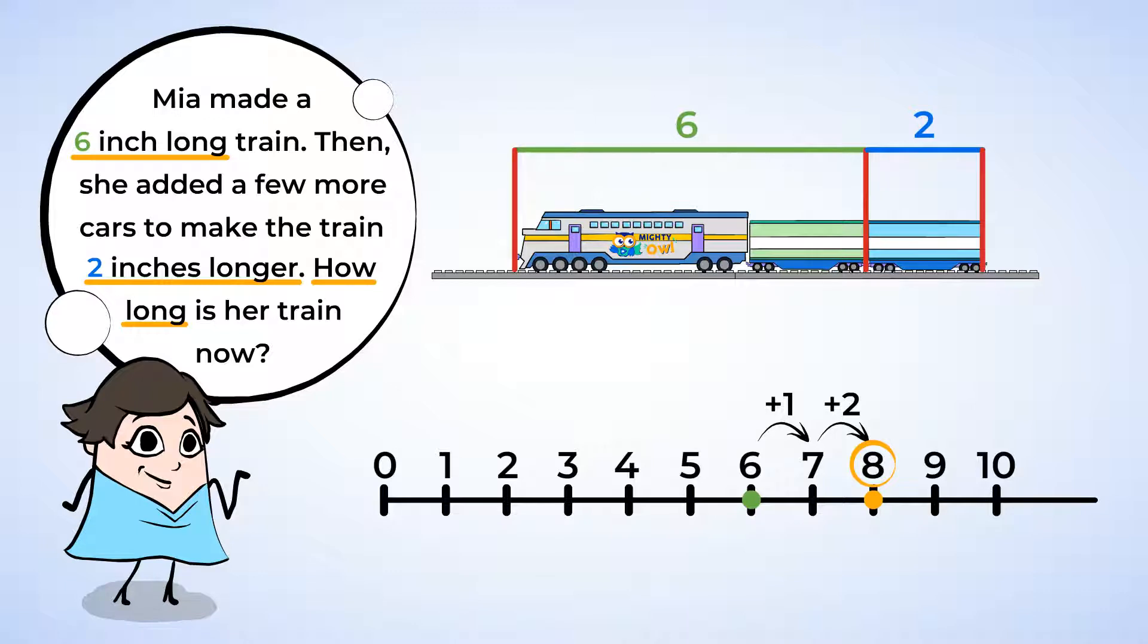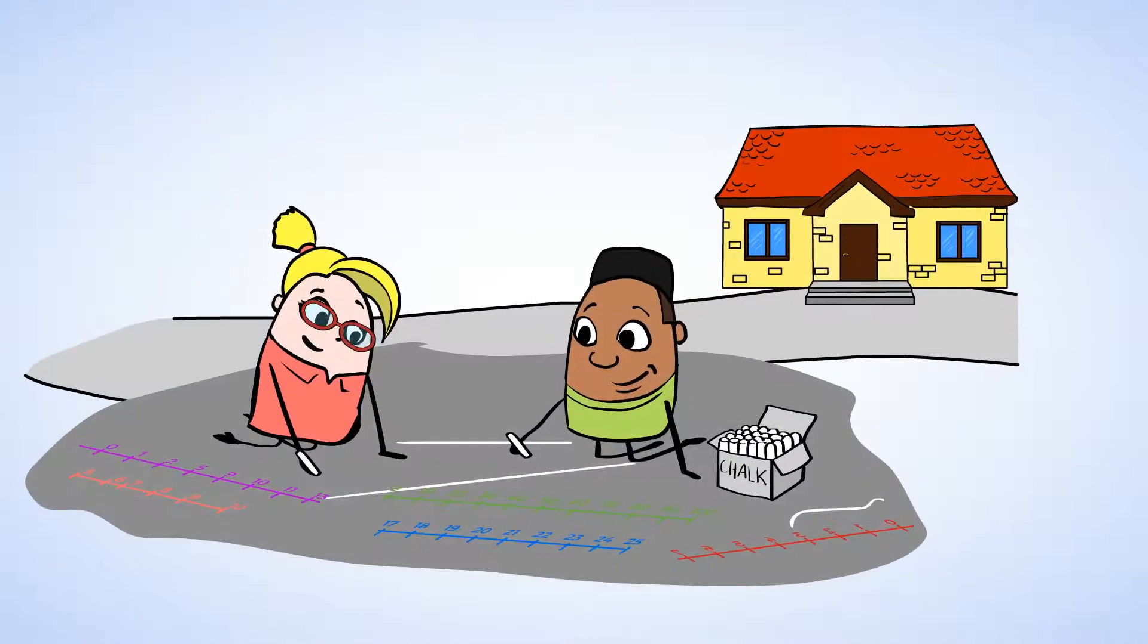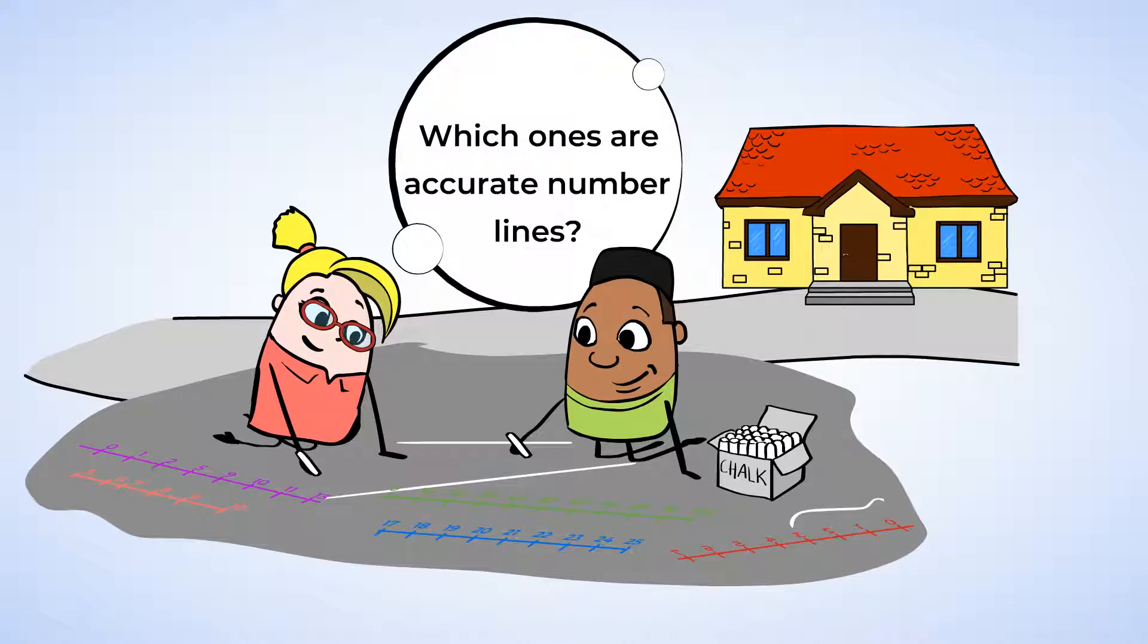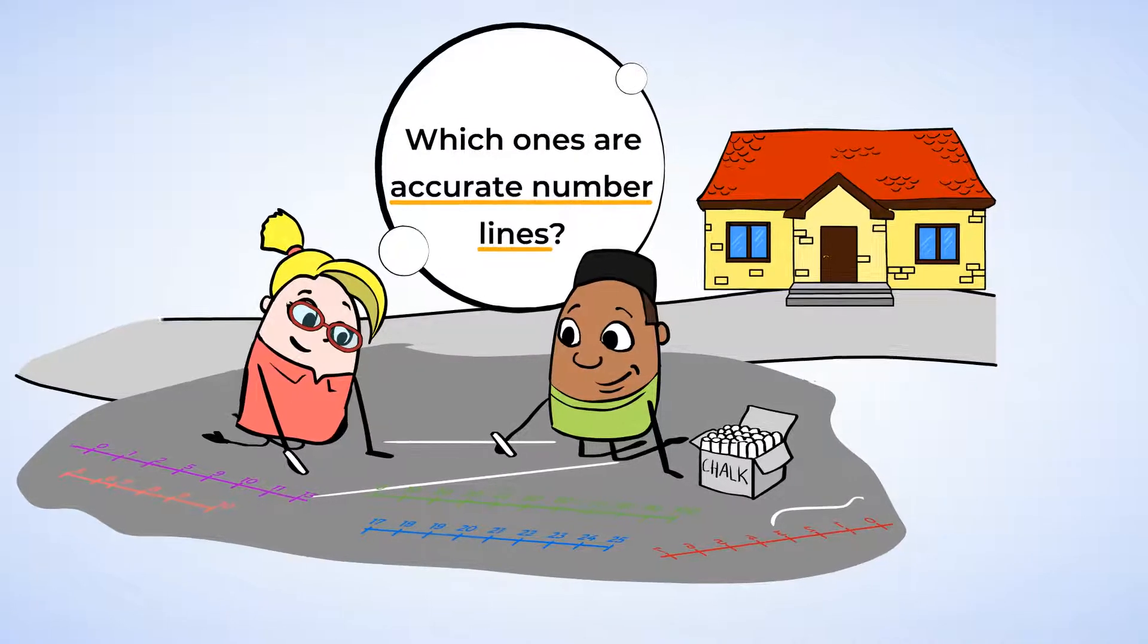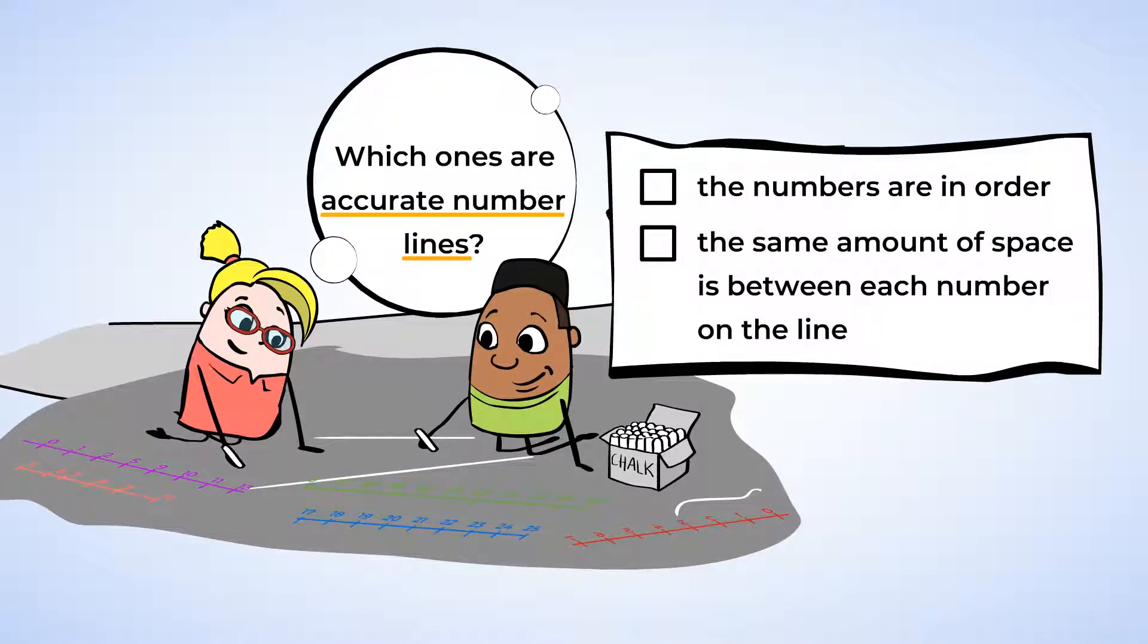Now we will continue using number lines for addition and subtraction in another video lesson. But first, I want to make sure you really understand number lines. Will and Jenny are outside drawing number lines in chalk on a driveway. Some of the number lines aren't correct though. Let's look at what they've drawn and figure out which ones are accurate number lines. As we look at each number line, we're going to check to see if the numbers are in order and the same amount of space is between each number on the line.